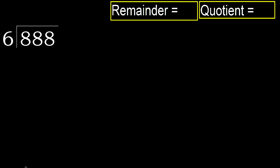888 divided by 6. 8 is not less, therefore work with 8. 6 multiplied by which number is nearest to 8, but not greater? 6 multiplied by 2 is 12, which is greater. Multiply by 1: 6 is not greater.